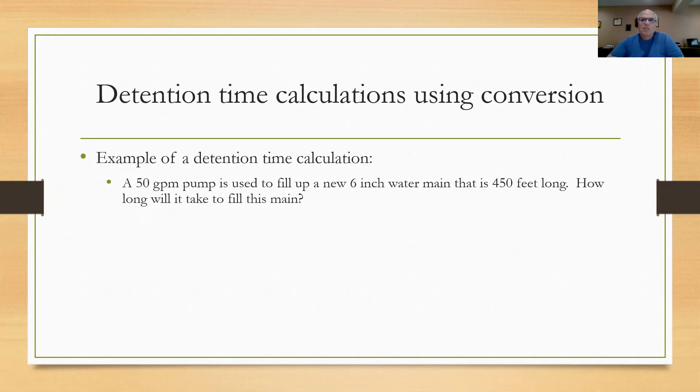Here's another detention time calculation using a conversion. Example where they're telling you that you have a 50 gallon per minute pump. You're out in the field and you're using it to fill up a new 6-inch water main. It's 450 feet long. How long is it going to take to fill that main? Well, here they haven't given you a volume. You've got to calculate the volume on your own first, so that you can do the detention time calculation. So the way I set this up was I set my formula of volume divided by the flow rate for detention time. I calculate the volume of the pipe.